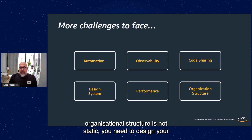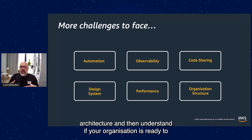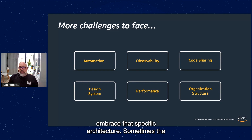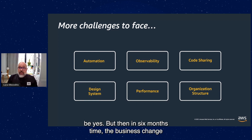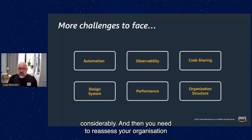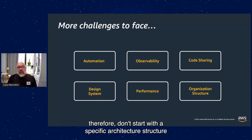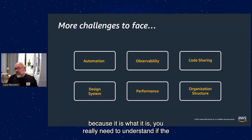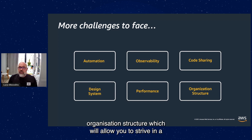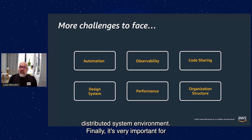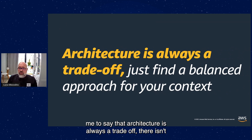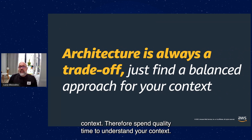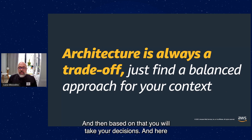Finally, organization structure. Organization structure is not static — you need to design your architecture and then understand if your organization is ready to embrace that specific architecture. Sometimes the answer is yes, sometimes it's not, and sometimes the business changes considerably after six months and you need to reassess. Don't start with a specific architecture structure just because it is what it is. Architecture is always a trade-off — there isn't right or wrong. You need to find the right balance inside your context, so spend quality time to understand your context and then take your decisions based on that.